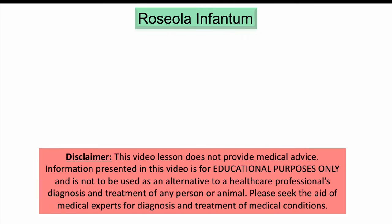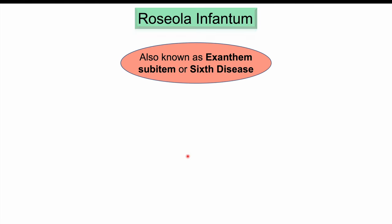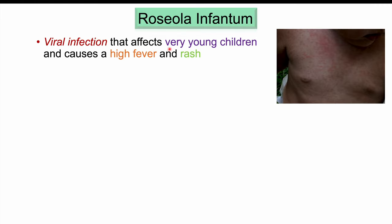This lesson is on roseola infantum, which is a common cause of a high fever and a rash in young infants. We're going to talk about the causes for this condition, the signs and symptoms, how it's diagnosed, and how it's treated. Roseola infantum is also known as exanthem subitum or sixth disease. It is a viral infection that affects very young children, causing a very high fever and rash.